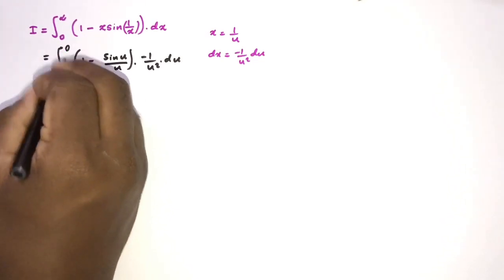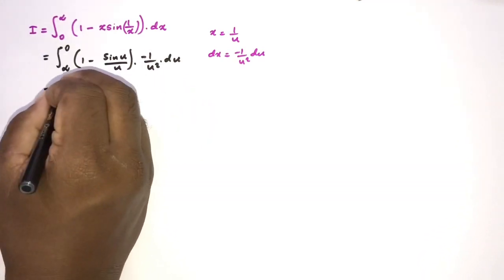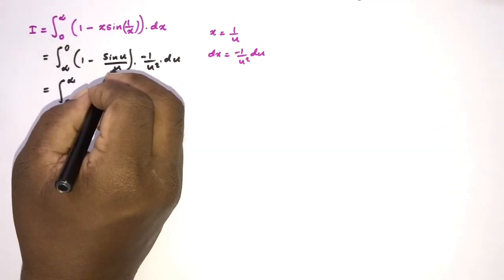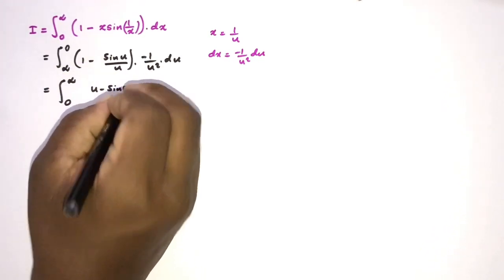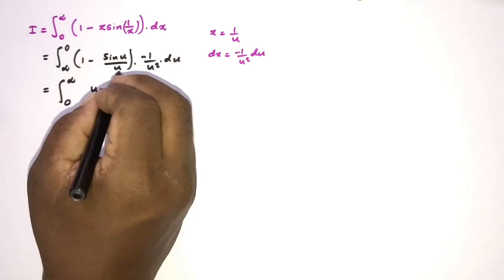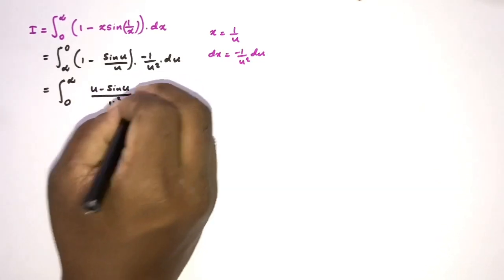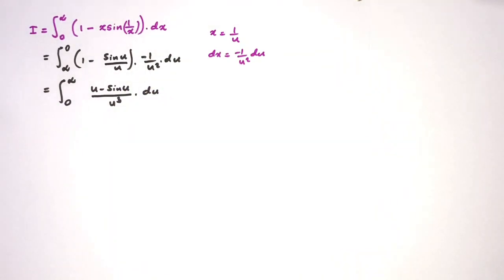Swapping the limits cancels the minus sign, giving an integral from 0 to infinity. The integrand becomes (u minus sine of u) divided by u times u squared, which simplifies to (u minus sine of u) over u cubed du.